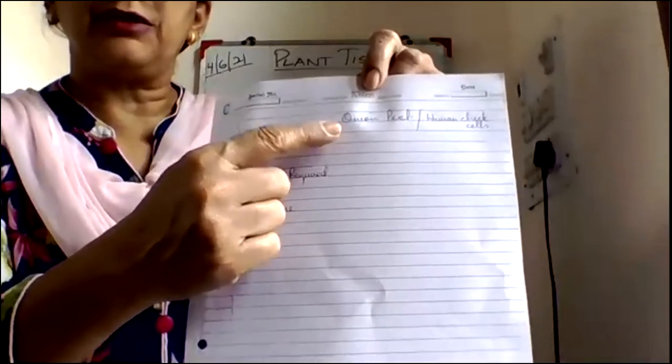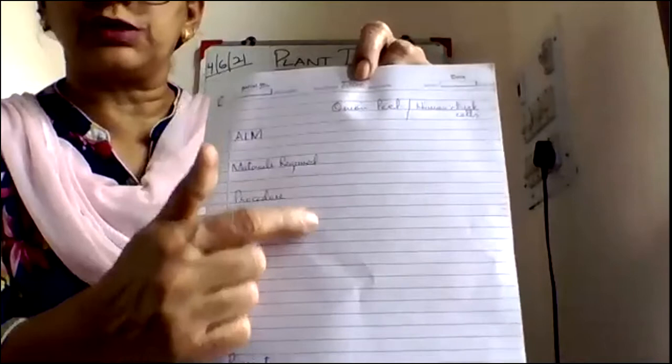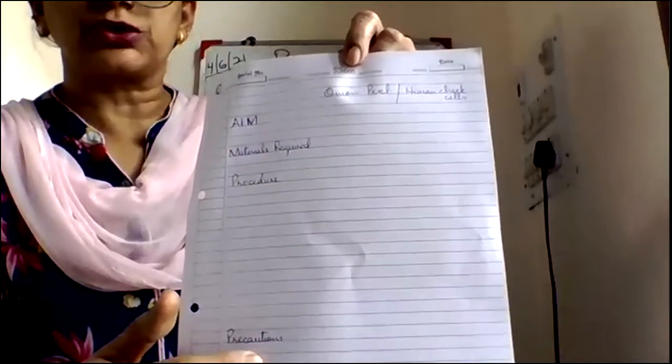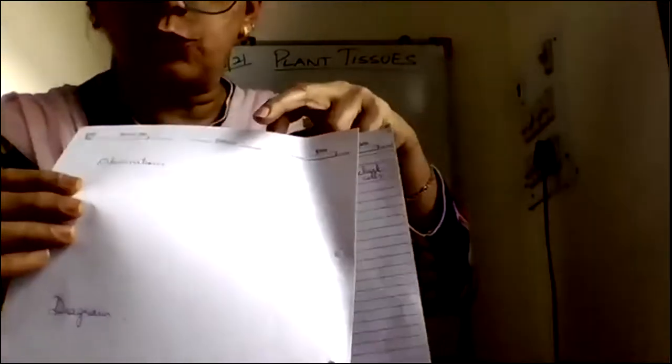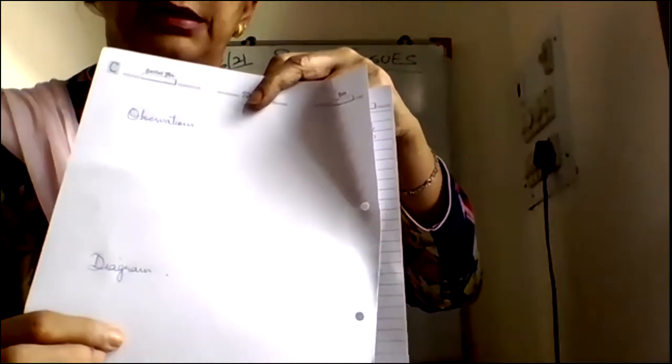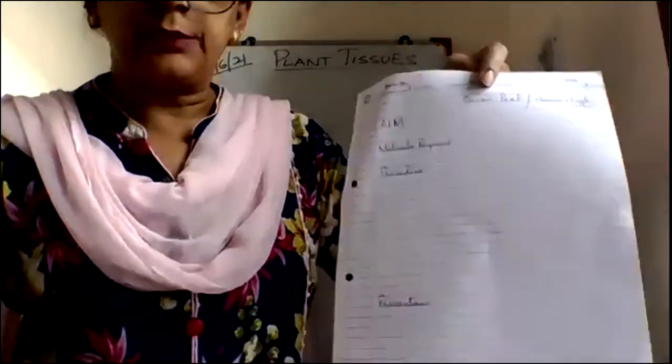For onion peel, this is activity 1A. Write down the procedure and the precautions, then take another sheet. On the plain side of this sheet, write down the observations first and then draw the diagram for the onion peel cells. Keep in mind that you don't have to draw the diagram on the back side — draw it on the other sheet. When compiling, keep the sheets so that the diagram and observation for this activity are right in front of it. Similarly, take another two sheets.